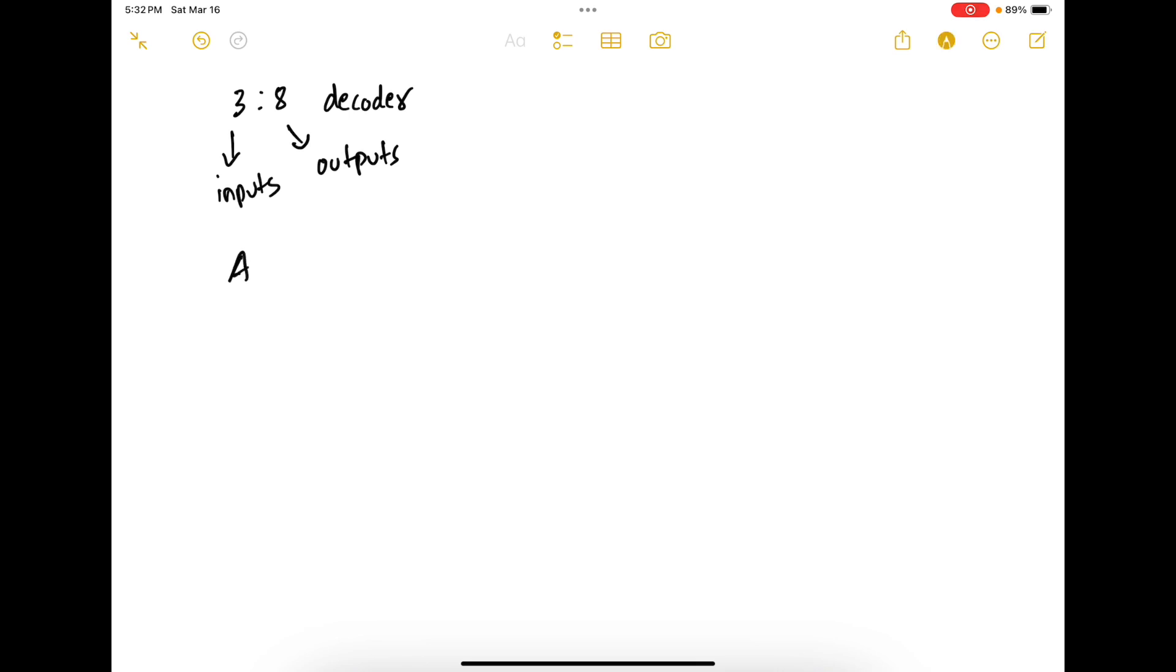So the truth table for that is A, B, C - those are the inputs. Outputs are Y7, Y6, Y5, Y4, Y3, Y2, Y1, and Y0.